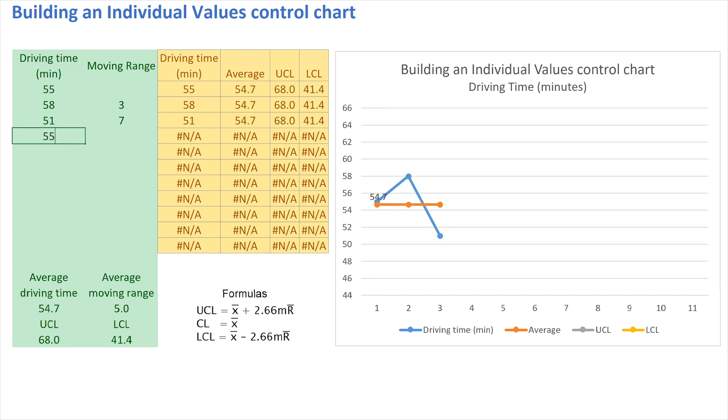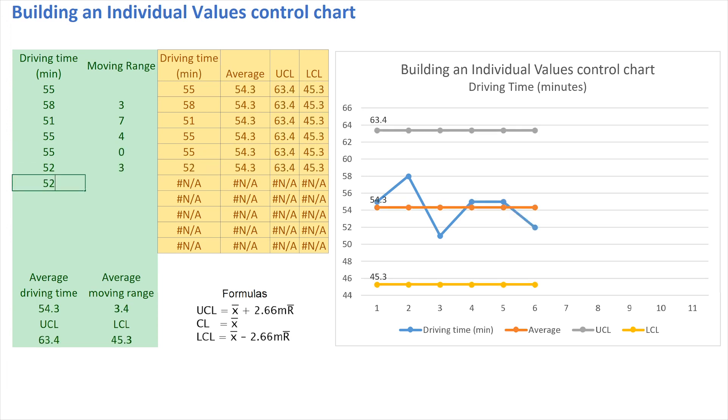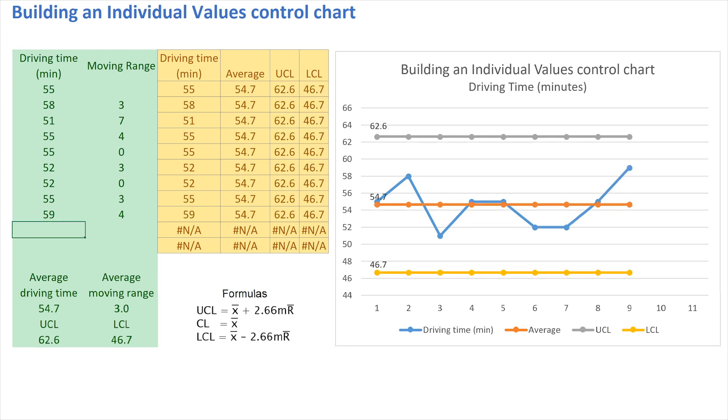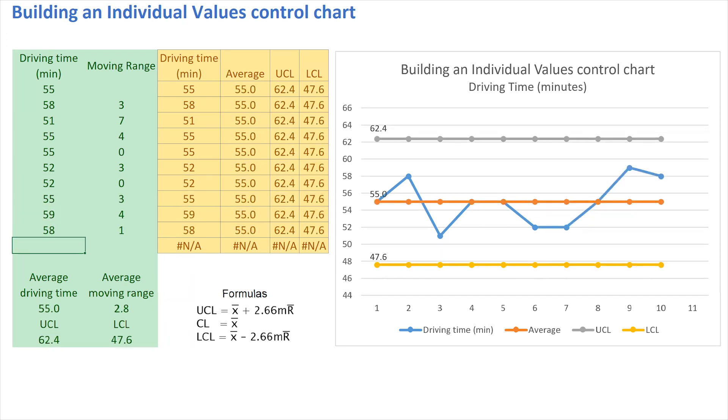You can also see in the plotting area how all the points that are listed and calculated already here are being charted. As I enter additional values, you will see how these various limits and averages are recalculated until we have a complete picture of the values that we wanted to show. This is how you build an individual values control chart.